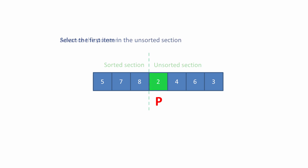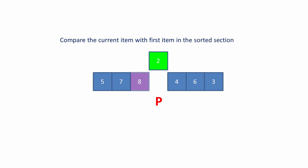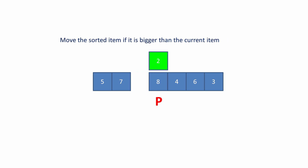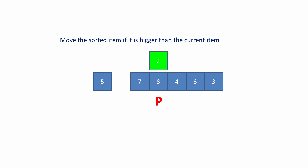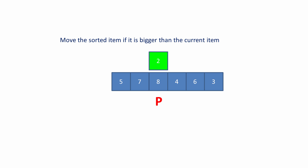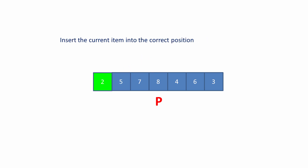On the right, select a new current item — that's the first item in the unsorted section. Compare the current item with the first item in the sorted section. Move the sorted item if it's bigger than the current item. Again compare the current item with the next item in the sorted section and move the sorted item if it's bigger than the current item. Again compare the current item with the next item in the sorted section and move the sorted item if it's bigger than the current item. Insert the current item into the correct position and advance the pointer. You can see that the portion of the list on the left-hand side of the pointer is in order.